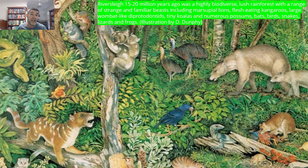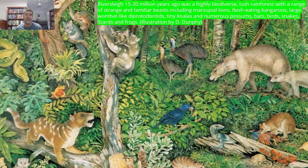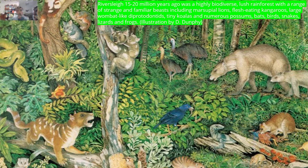This is an artistic impression of Riversleigh 15 to 20 million years ago as a highly diverse, lush rainforest. Lots of strange but also familiar animals, including marsupial lions, flesh-eating kangaroos, the large wombat-like diprotodons, tiny koalas and possums, bats, birds, snakes — I love Montypythonoides — lizards and frogs. Just a fantastic diversity of life. While this is an artistic impression and no one was there at the time, it's amazing how accurate many of these reconstructions can be when based on our knowledge of current existing animals — their skeletal formations, how muscles attach to bone — allowing us to reconstruct what life might have looked like.